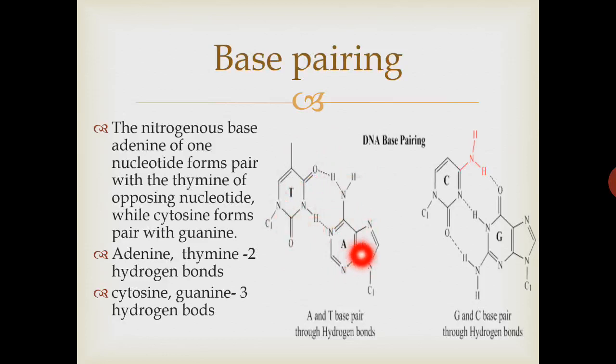Thymine and adenine have two hydrogen bonds, and in cytosine and guanine, triple hydrogen bonding is present. Hydrogen bonding is present in the center of both strands. So specificity means that adenine is always with thymine, and cytosine is always with guanine.